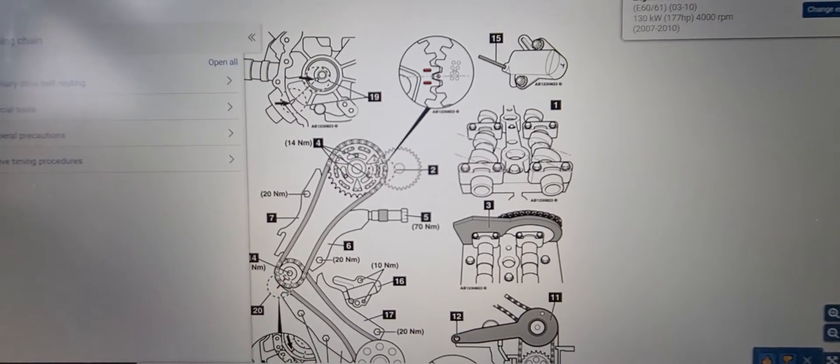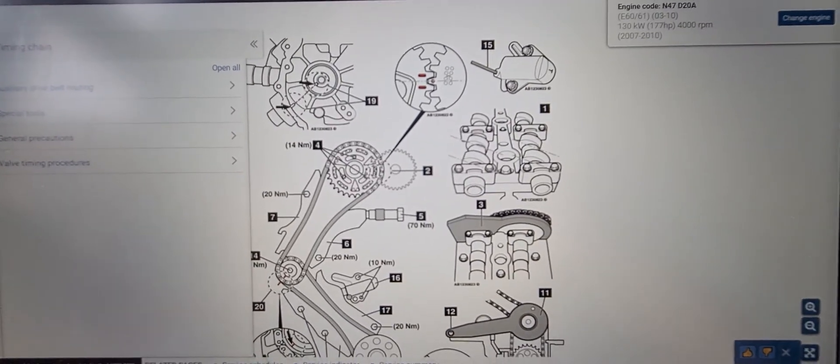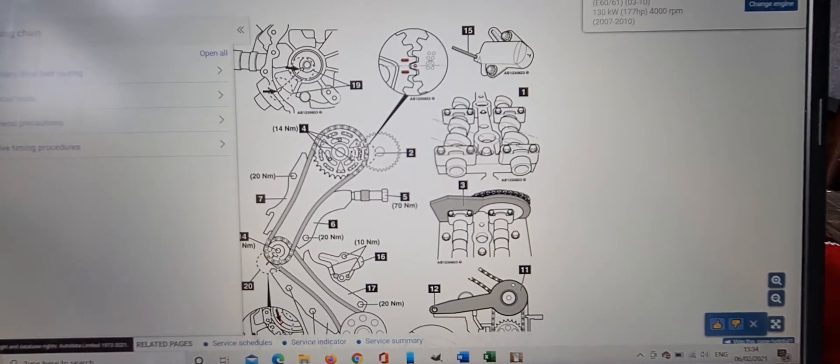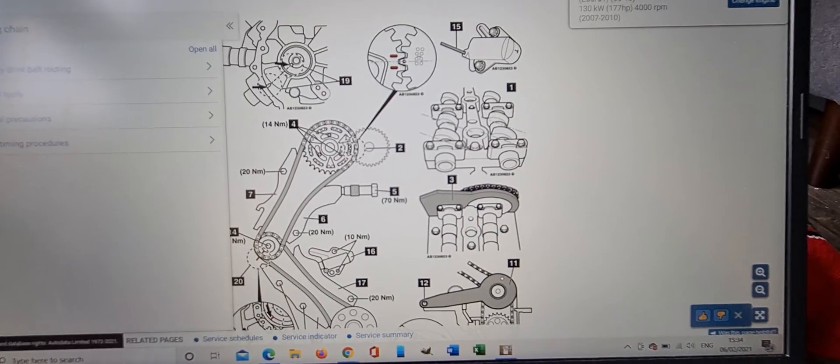Hi everyone, welcome to another video. Today we're looking at the timing chain diagram and the drive belt diagram for the BMW 5 Series 2.0L 520D between 2007 and 2010.